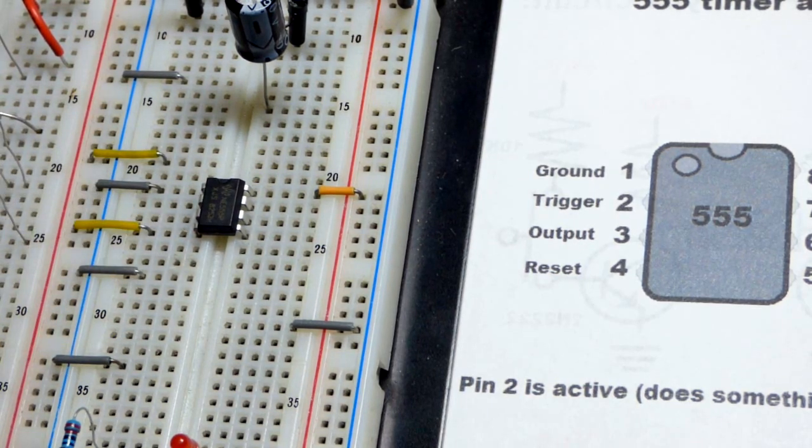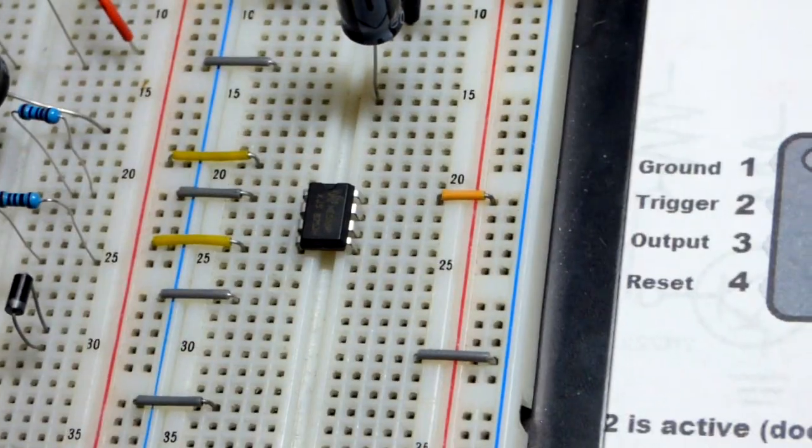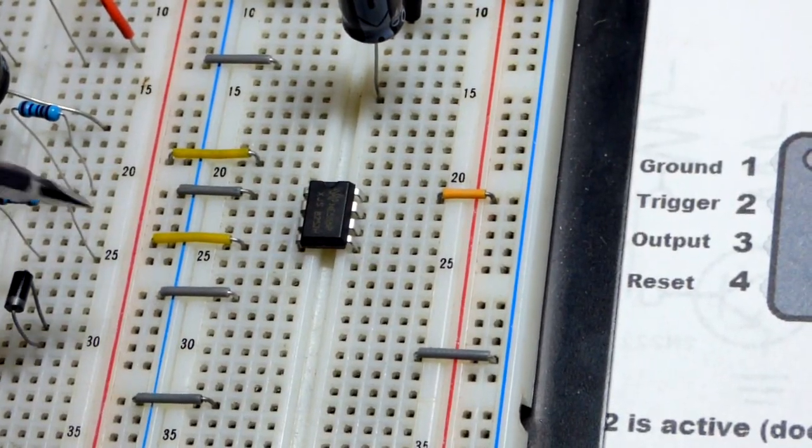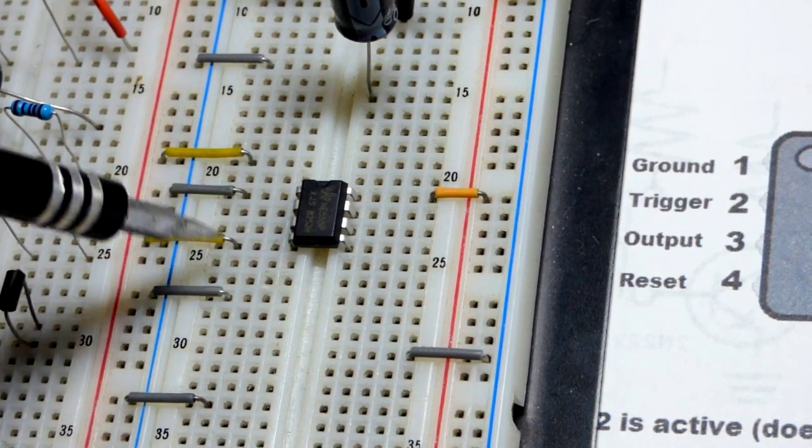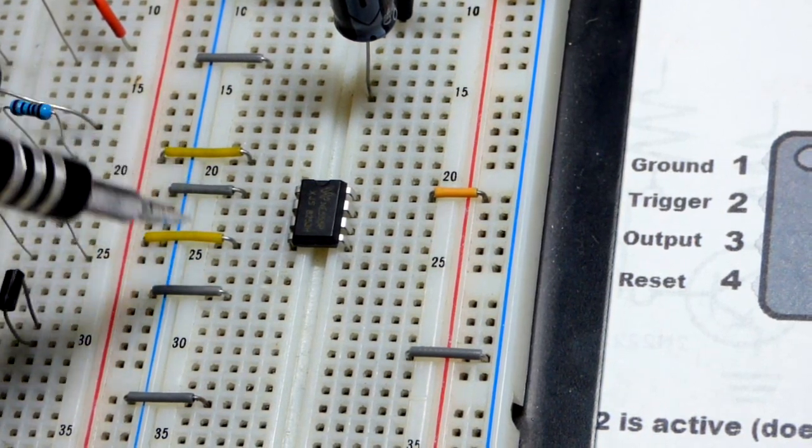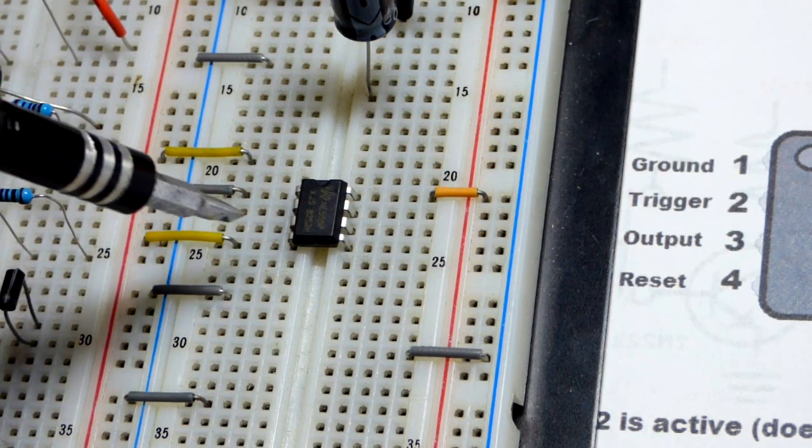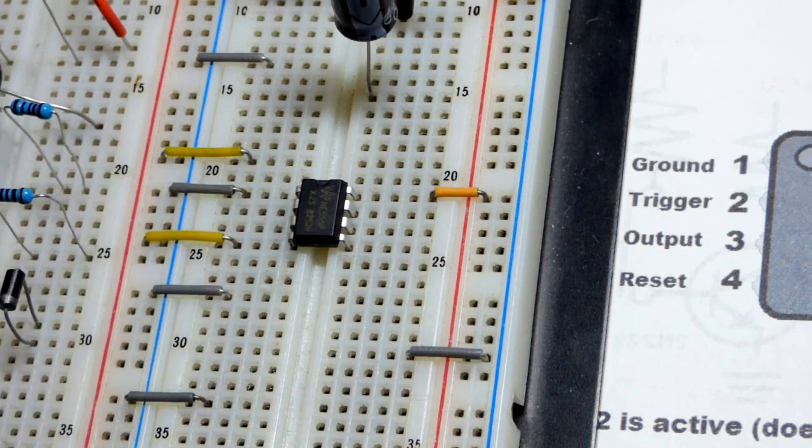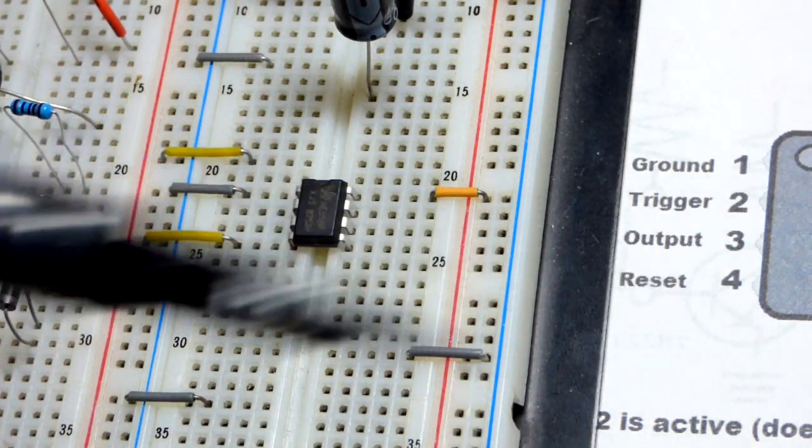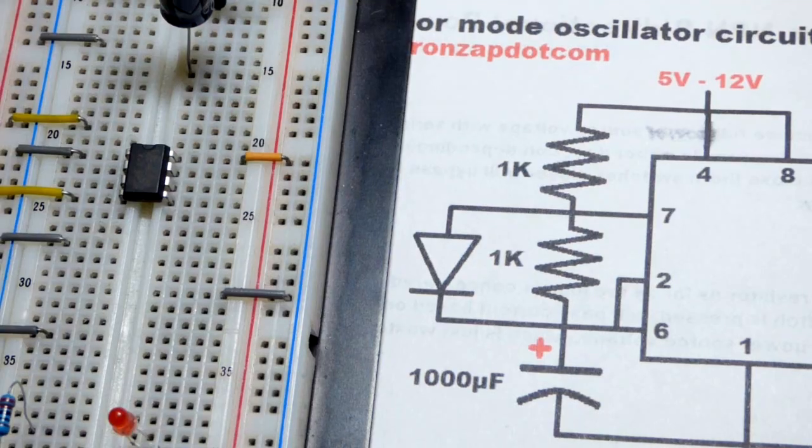We have pin number four here, the reset pin, directly to the positive rail. It is waiting for a low input, somewhere below half of the supply voltage. We could go directly to negative rail, whatever. That's what it's waiting for. So if we keep it to the VCC, the positive supply, the pin will not do anything. That's what we want. We don't want the 555 timer to reset. That overrides anything else that's going on.